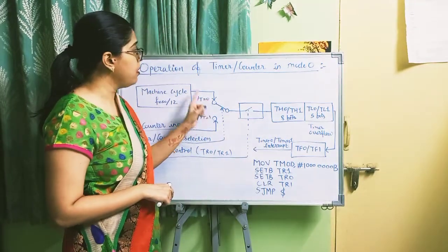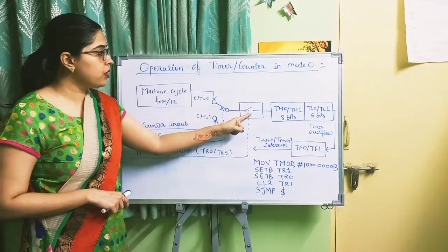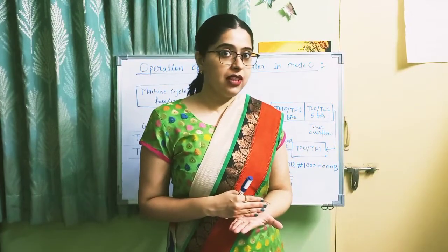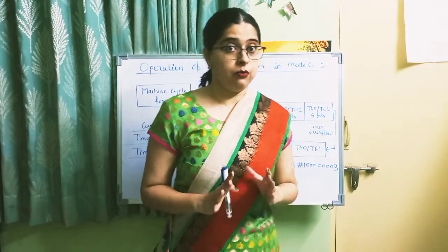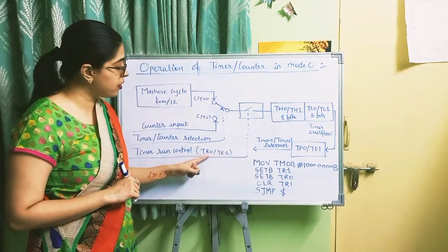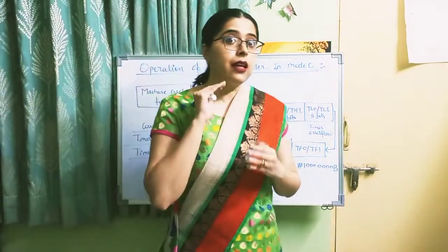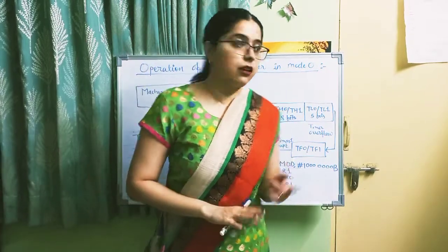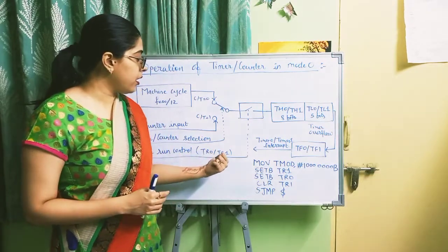When C#T is 0, Timer 0 works as a timer. There is another switch connected to TR0 or TR1. TR0 is for Timer 0 and TR1 is for Timer 1 - these bits were explained in the previous lecture on TCON and TMOD registers. When TR0 is 1, Timer 0 starts; when TR1 is 1, Timer 1 starts. The switch state determines whether TR0/TR1 is 1 or 0.